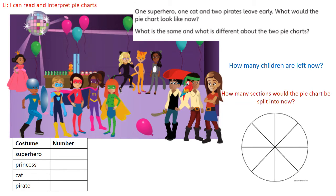Here's our next challenge. One superhero, one cat and two pirates leave early. What would the pie chart look like now? So we're going to cross out one superhero, we've lost a cat, and we've lost two pirates. Now let's complete our tally chart. How many superheroes have we got left? We've got four. We've still got our one princess, we've now only got two cats, and we've now only got one pirate. So how many children do we have altogether? We've got eight children now, so we have split our pie chart into eight sections.